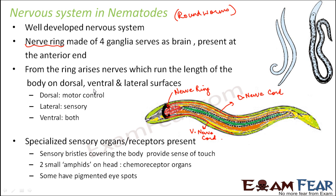There are three nerve cords: the dorsal nerve cord running along the back, the ventral nerve cord running along the inner side, and the lateral nerve cord running sideways. The dorsal nerve cord controls motor functions — all types of movements. The lateral nerve cord is sensory, detecting stimuli from sensory organs. The ventral nerve cord acts as both motor and sensory. Together, these three nerve cords handle the entire nervous system. There are also specialized sensory organs: sensory bristles covering the body that provide the sense of touch.